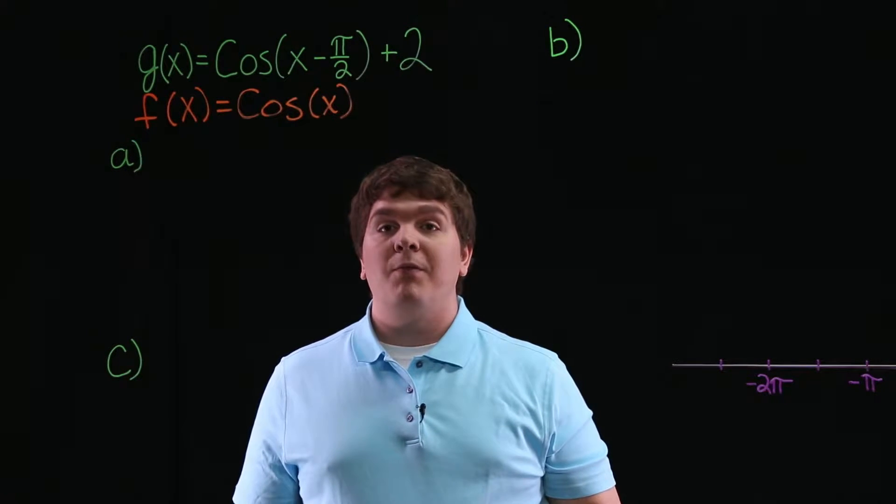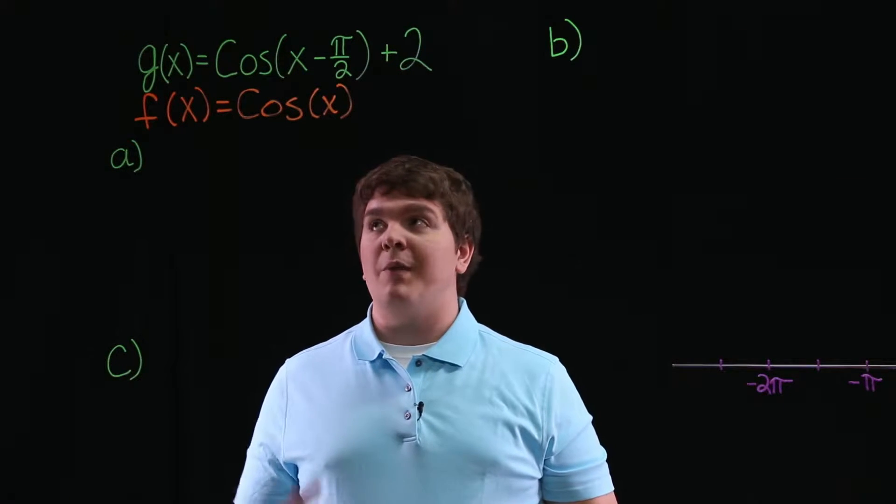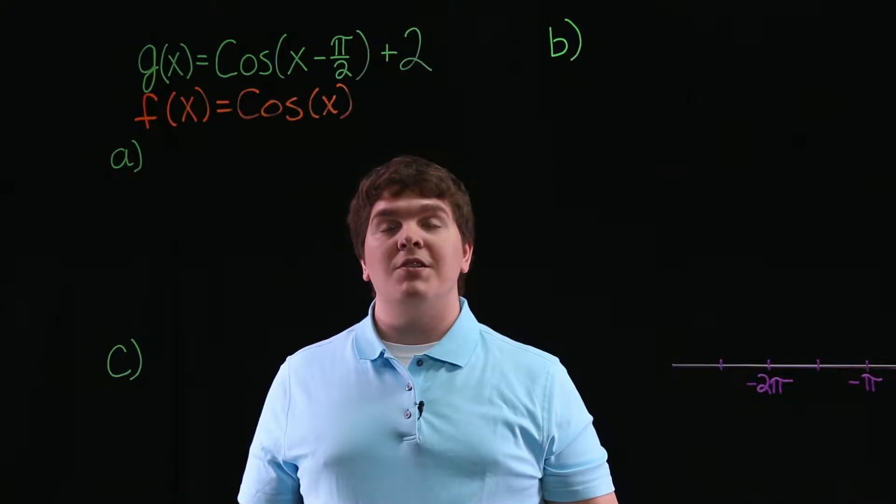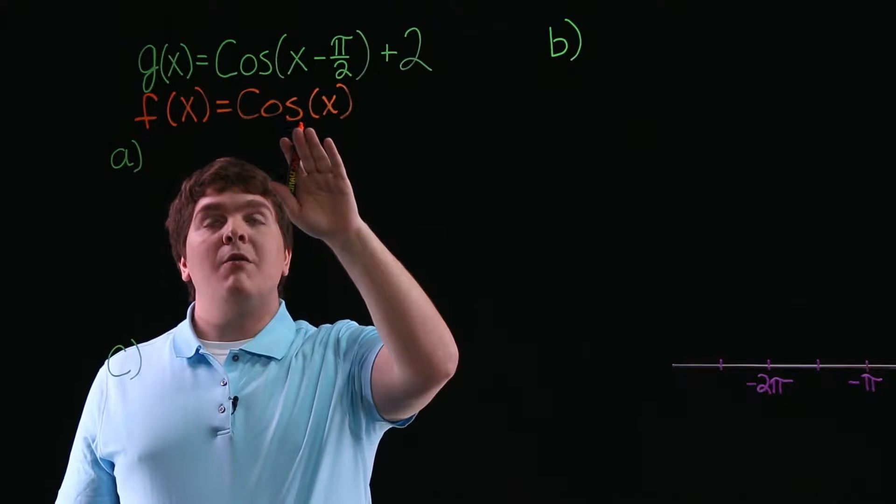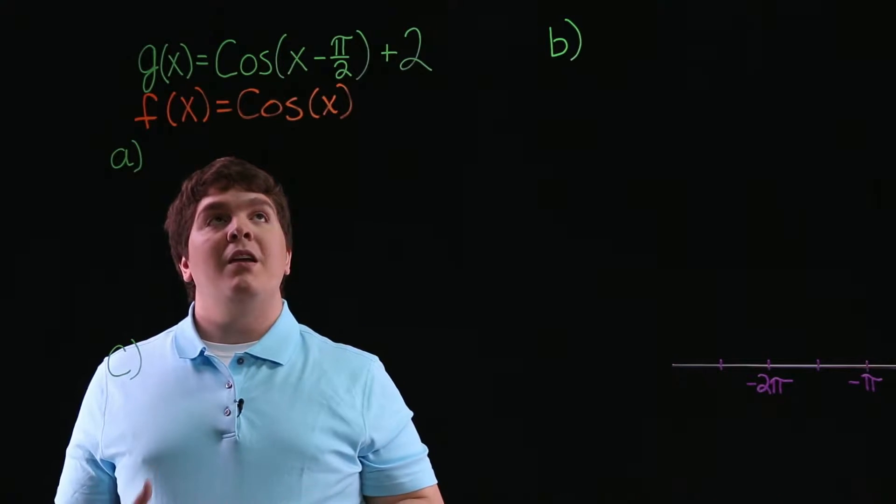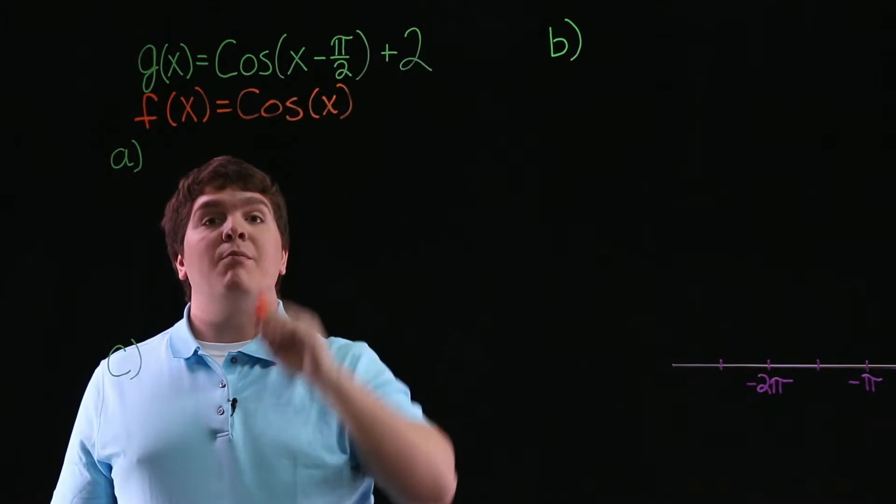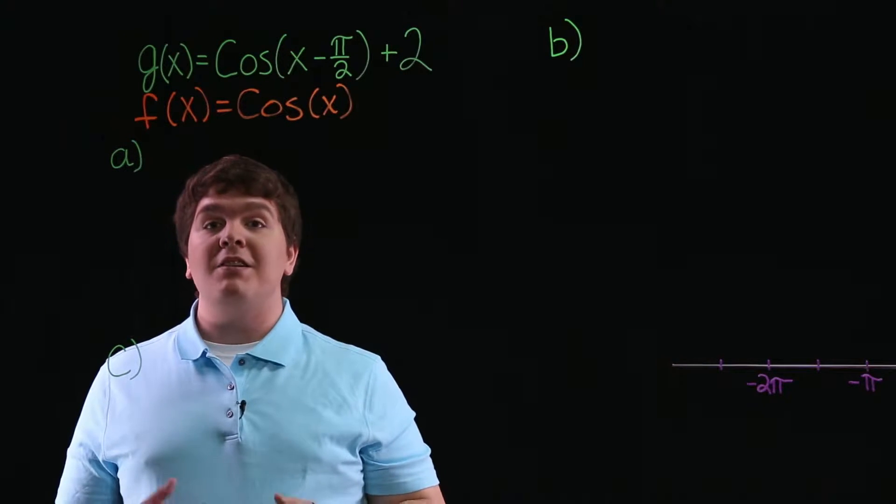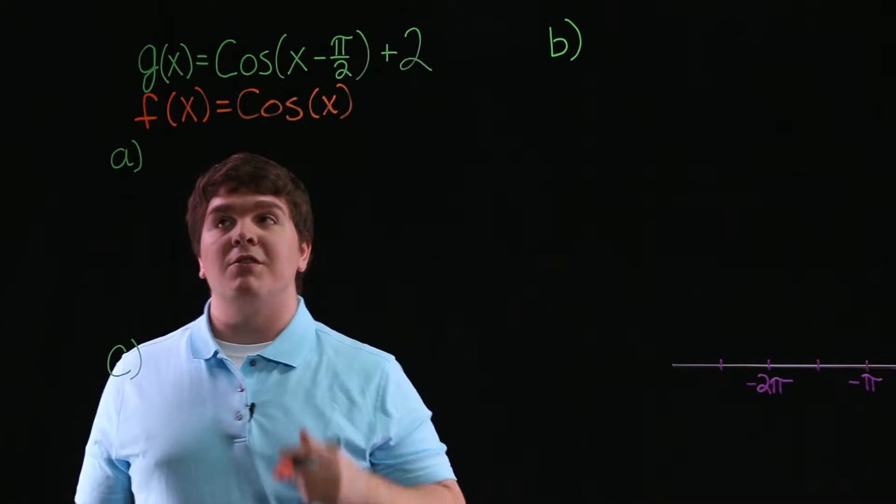For part A of this problem, we're asked to describe the sequence of transformations from f to g. Going from f of x to g of x, since we have a cosine of x minus pi over 2, f of x is shifted pi over 2 units to the right.